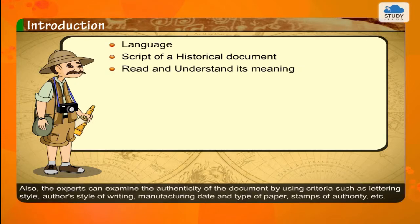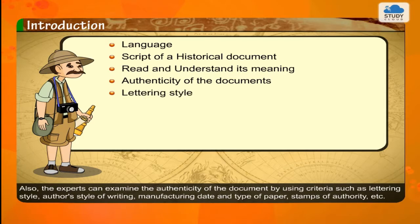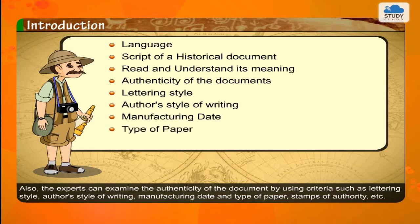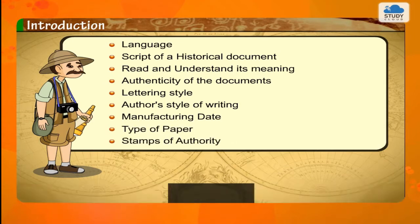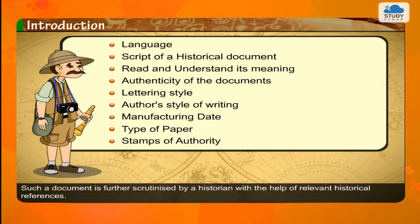Also, experts can examine the authenticity of a document by using criteria such as lettering style, author style of writing, manufacturing date, type of paper, stamps of authority, etc. Such a document is further scrutinized by a historian with the help of relevant historical references.